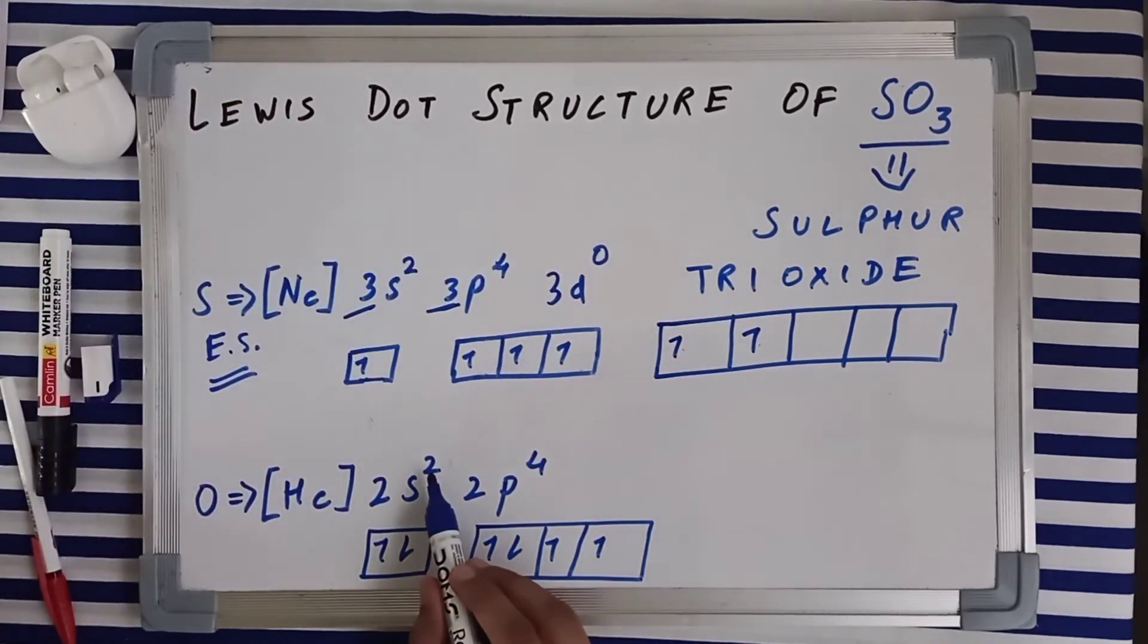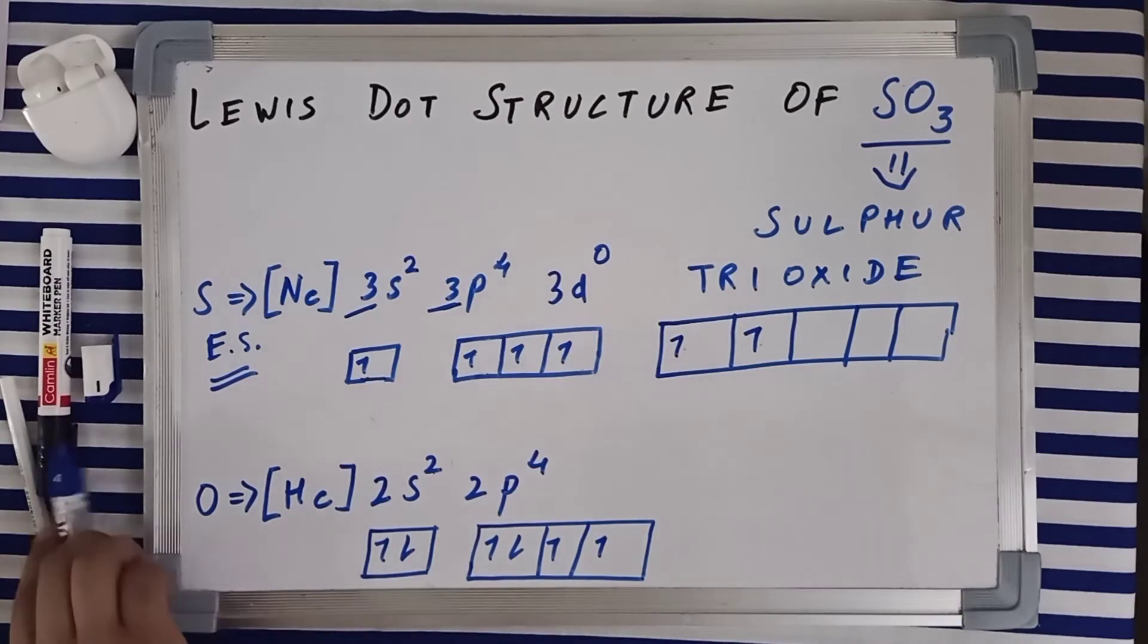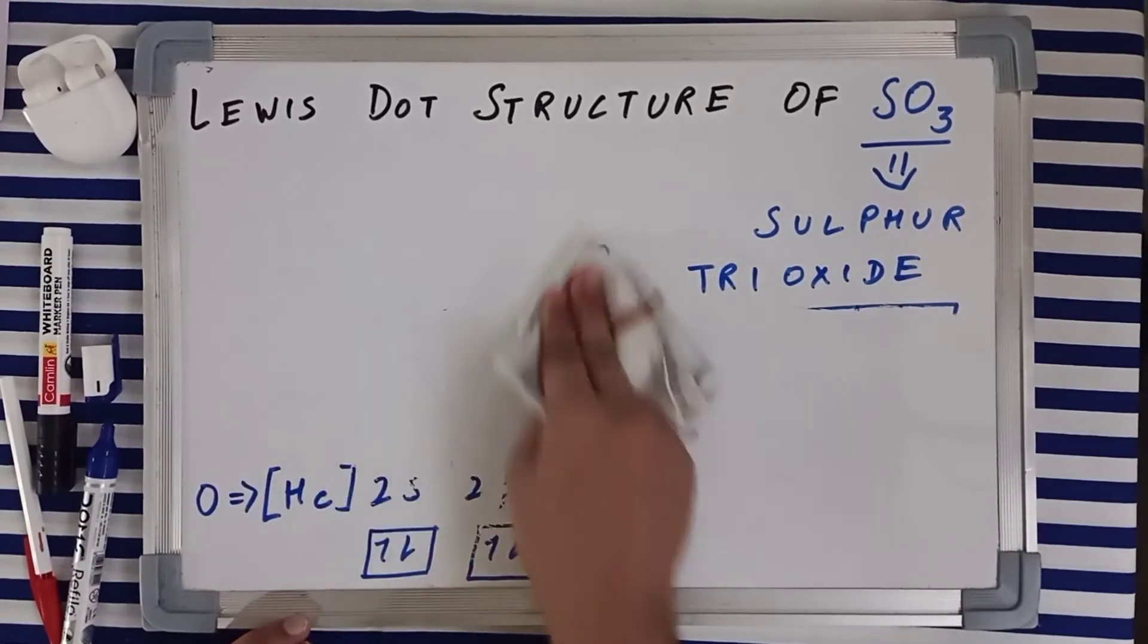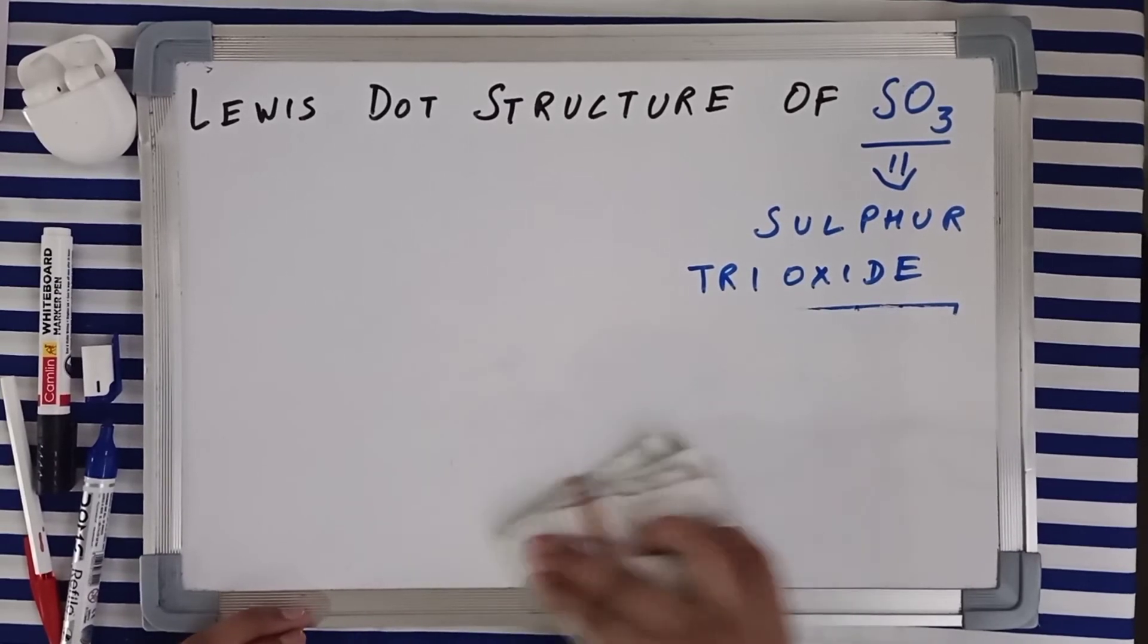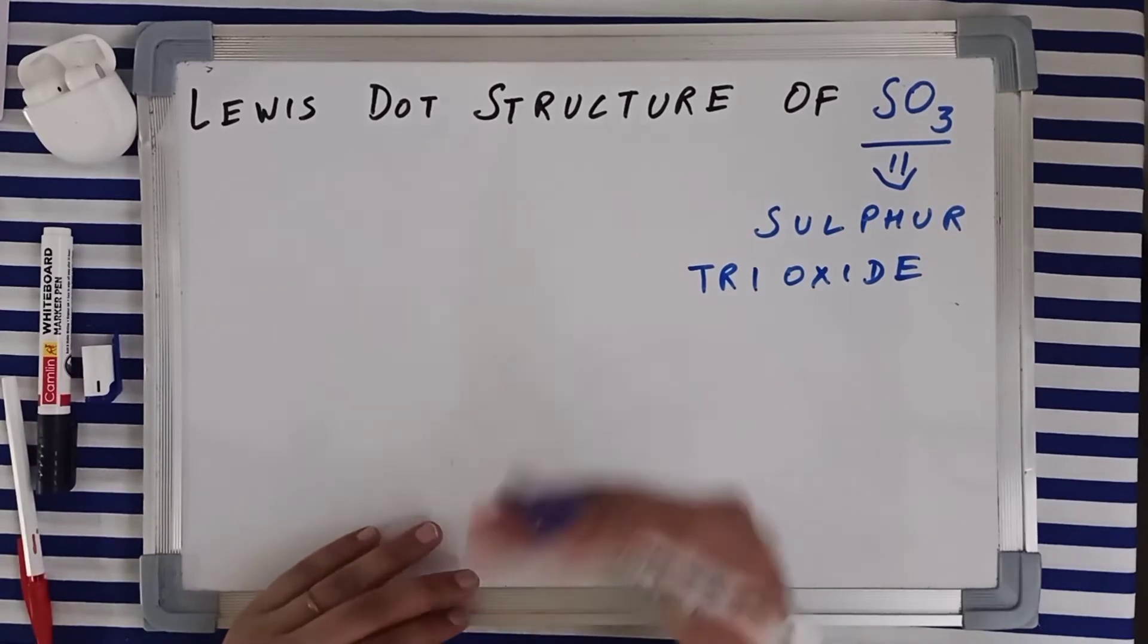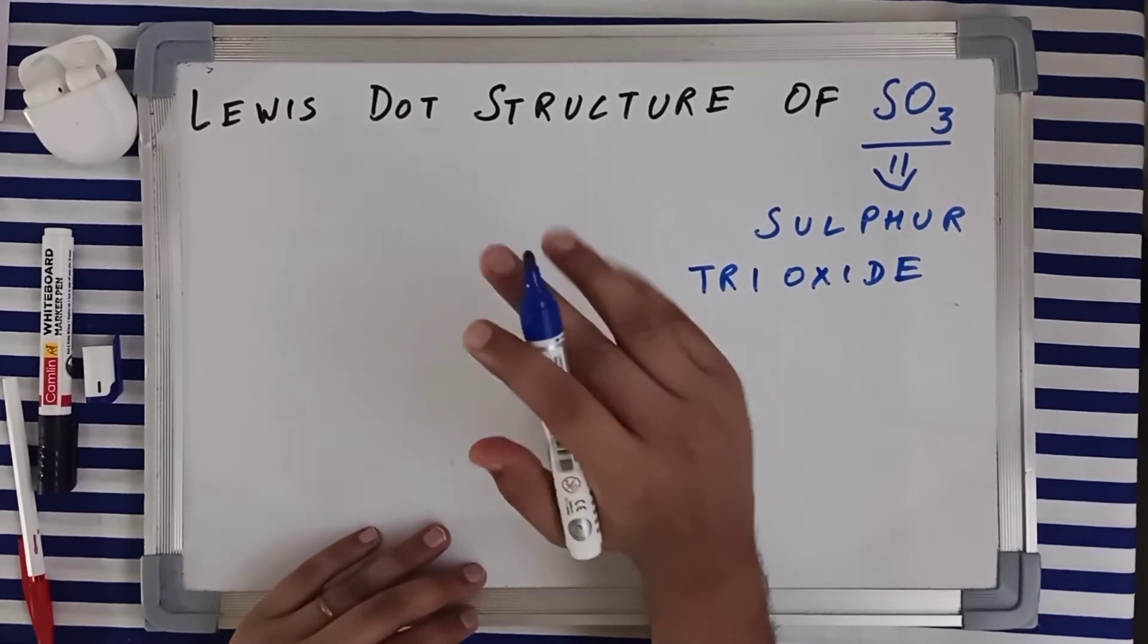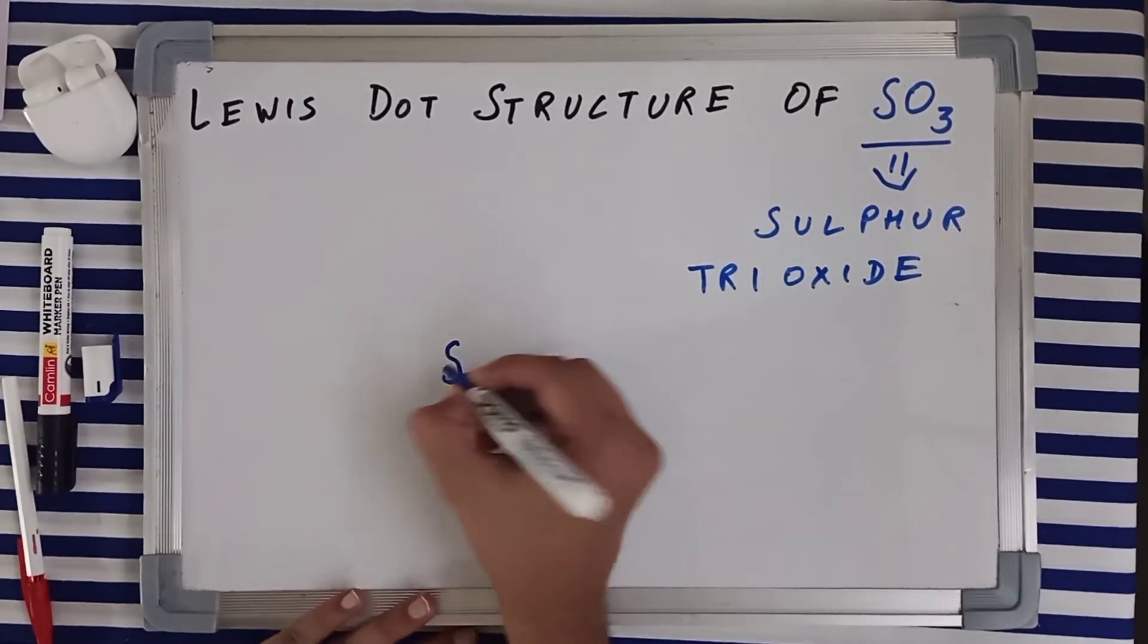Now let's get into the structural part. So I gave you the reason why sulfur can make six bonds: because of the excitation, because of the elongated d subshell and the shifting of electrons from the s and p subshell to the d subshell, which is why sulfur can make six bonds, whereas oxygen cannot because oxygen does not have any extra or vacant d subshell. There is no such thing as 2d subshell.